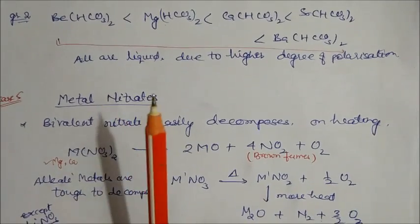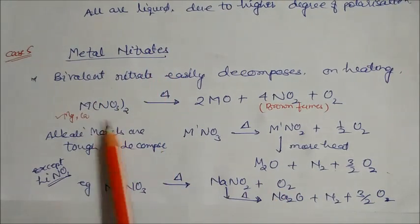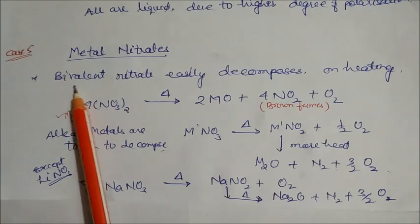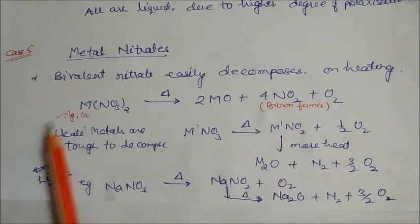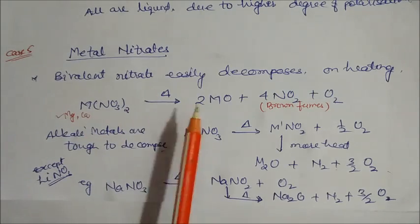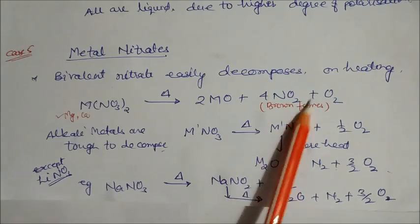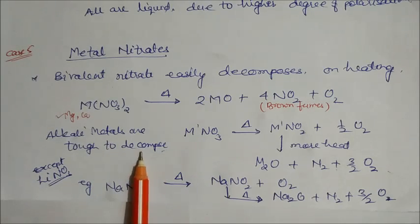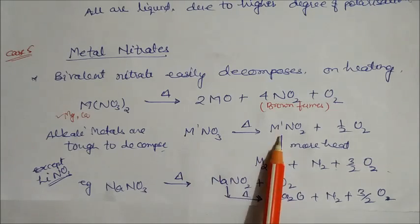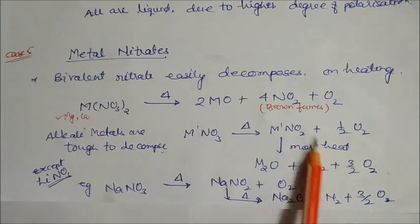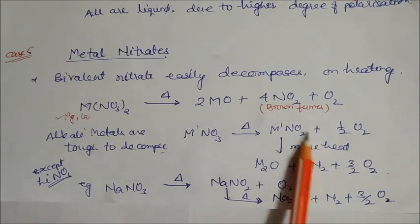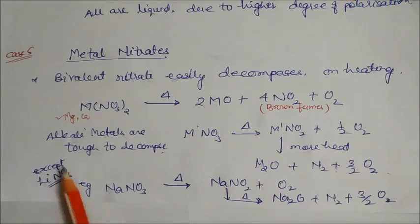For metal nitrates, bivalent metal nitrates decompose easily on heating to give metallic oxide plus nitrogen dioxide plus oxygen — nitrogen dioxide appears as brown fumes. Alkali metals like sodium, lithium, and potassium are more difficult to decompose, giving metal nitrite plus oxygen first. With more heat, metal nitrite gives M₂O plus nitrogen plus 3/2 oxygen. Exception: lithium nitrate decomposes faster than other Group 1 metals.